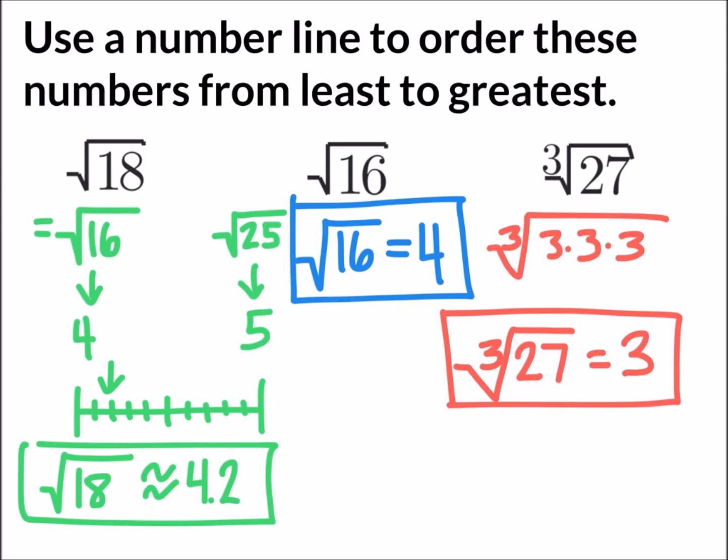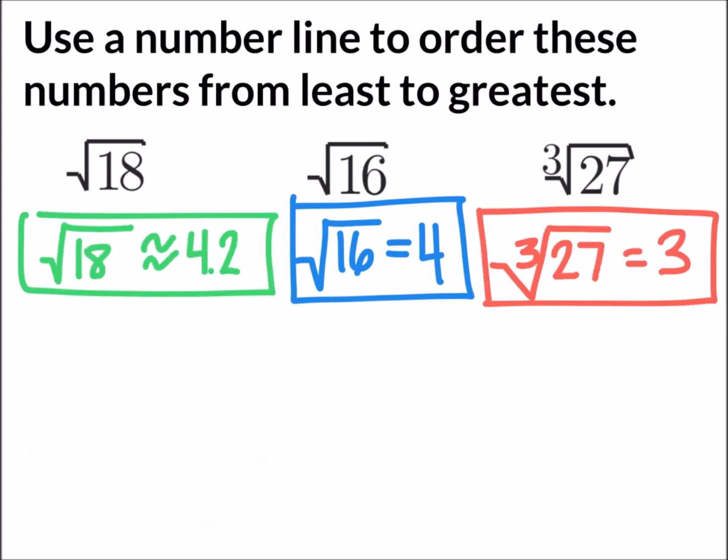So now we take those three values that we found and draw out a number line starting at zero, increasing from 1, 2, 3, 4, 5, since we're dealing with only positive numbers.